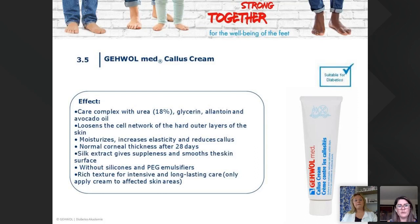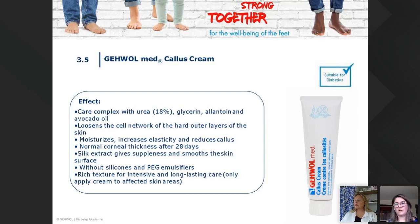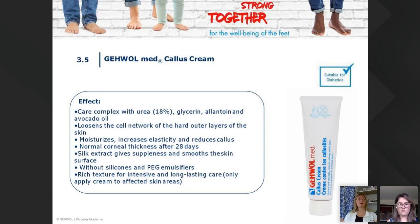The Lipidro has 10% urea and the foam has 3%, so that's another thing to consider. The foam absorbs faster; the Lipidro is ideal to prevent callus and ideal for home use. With a cream, you can do a mini massage, which stimulates circulation. The foam is quick — you apply it, massage it in, and it's done, non-greasy. With a cream, you get the benefit of the massage plus the difference in urea concentration.